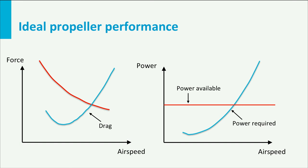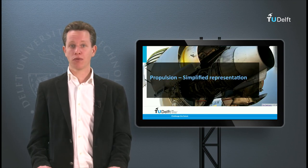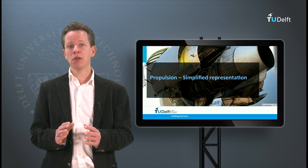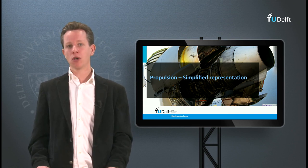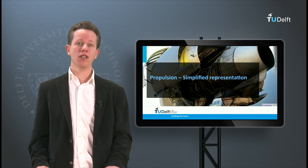In reality, thrust and power available of a variable pitch propeller have a different shape. However, the range of flight speeds of interest for performance calculations in this lecture series is the range where power available is indeed constant. So from now on I will assume that the power available for a propeller aircraft is independent of airspeed for a given flight altitude and throttle setting. In conclusion, I have expressed the propulsive force for both pure jet engines and variable pitch propellers as a function of airspeed to simplify the equations of motion. Because of the simple form of the thrust and power curves, this allows us to analytically calculate aircraft performance, as you will see in the next lectures.